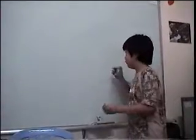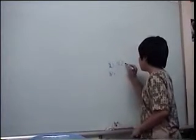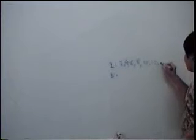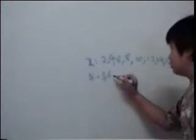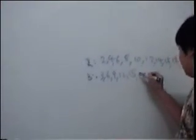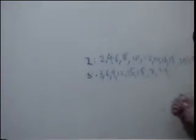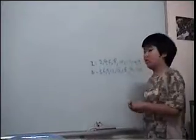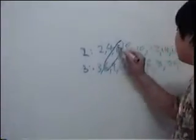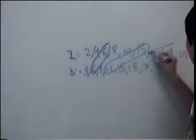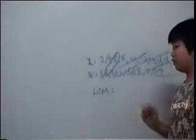Now we're going to list out the multiples of 2 and 3 under 25. And now we're going to circle the common multiples of 2 and 3. The common multiples of 2 and 3 under 25 are 6, 12, 18, and 24. And the least common multiple of 2 and 3 is 6.